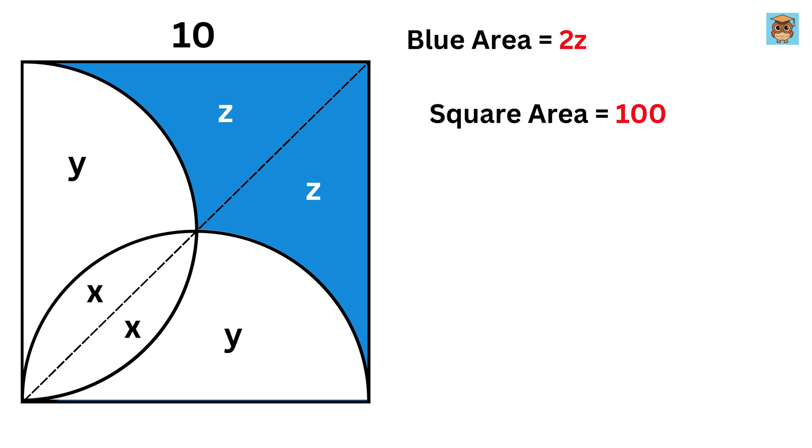Right? But the area of the square is equal to 2 times x, plus 2 times y, plus 2 times z. So, dividing by 2 on all sides gives us x plus y plus z equals 50.